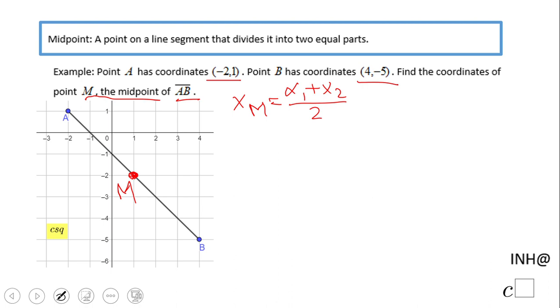In this case, we're going to have x sub 1, which is -2, plus x sub 2, which is 4, over 2. That will be positive 2 over 2, and we get 1.